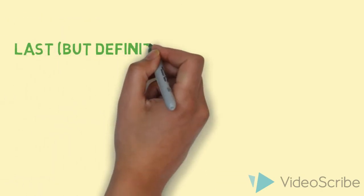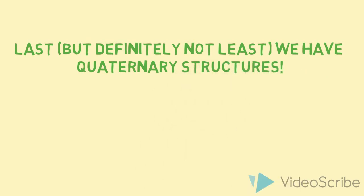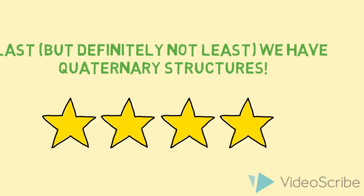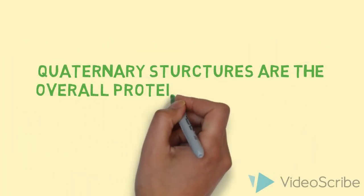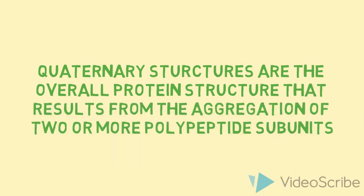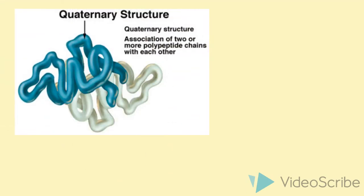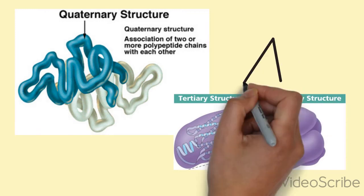Last, but definitely not least, we have quaternary structures. Quaternary structures are the overall protein structures that result from the aggregation of two or more polypeptide subunits. As you can see in this photo, the blue and the white are each of their own polypeptide combined together.